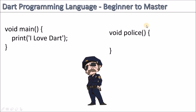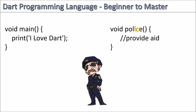You have to write the name of the function, then parenthesis to show that we are working with a function. Then you have an open curly brace and you close the curly brace. Inside the curly braces is where we have the code which the function is supposed to run every time it is called. For this police officer, inside the curly braces you would write 'provide aid.' If he was a cook, inside we'd have 'cook meals.' The police officer doesn't have 'cook meals' because his function is to provide aid. This is the basic concept you have to learn.